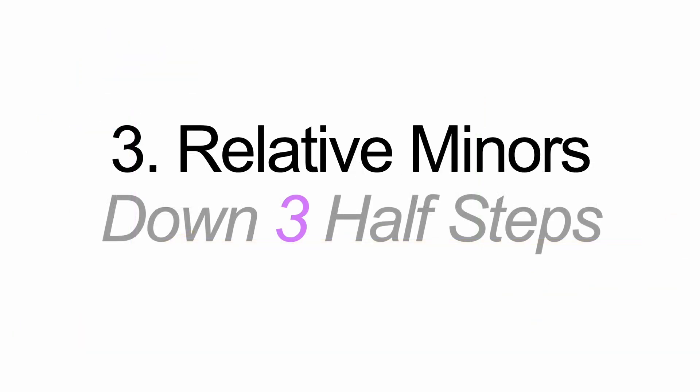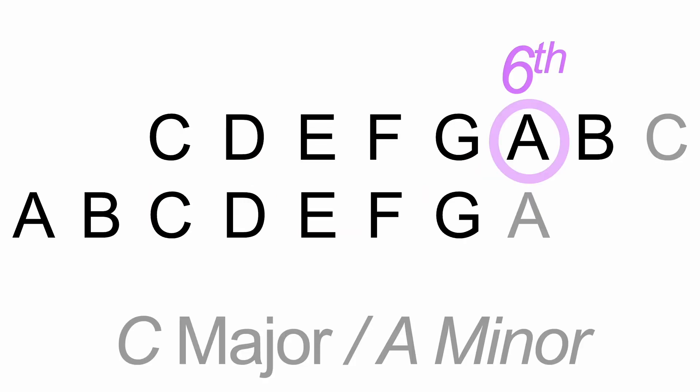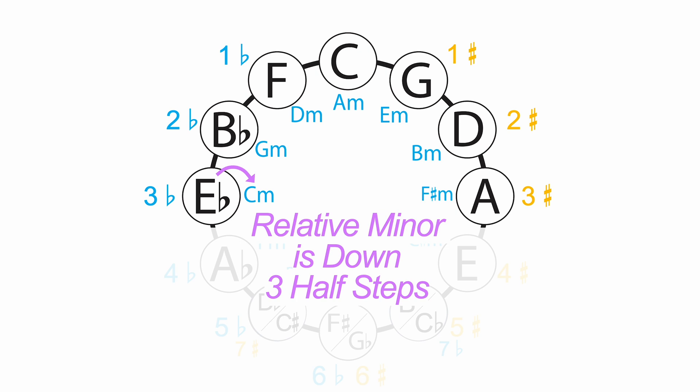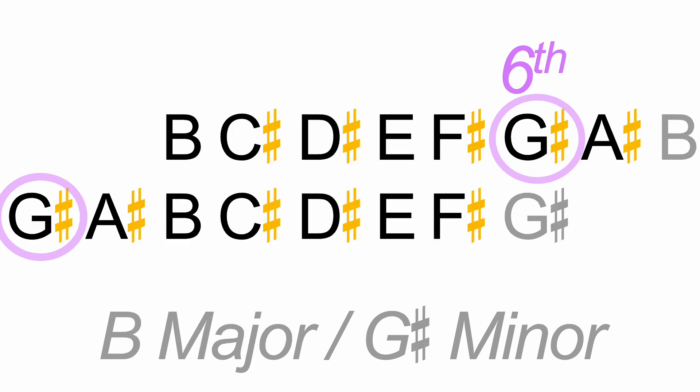The third strategy is using the relative minor: go down three half steps. C down to A minor — they're relative since they share the same key signature, the same DNA. Go down three half steps from the note C to get to A, and the sixth scale degree of C major is the root of A minor. E flat down three half steps gets to C minor — the sixth scale degree of E flat major is the starting note of C minor. B major to G sharp minor — go down three half steps. That's a really common one. So there are three ways to think about the minor keys.